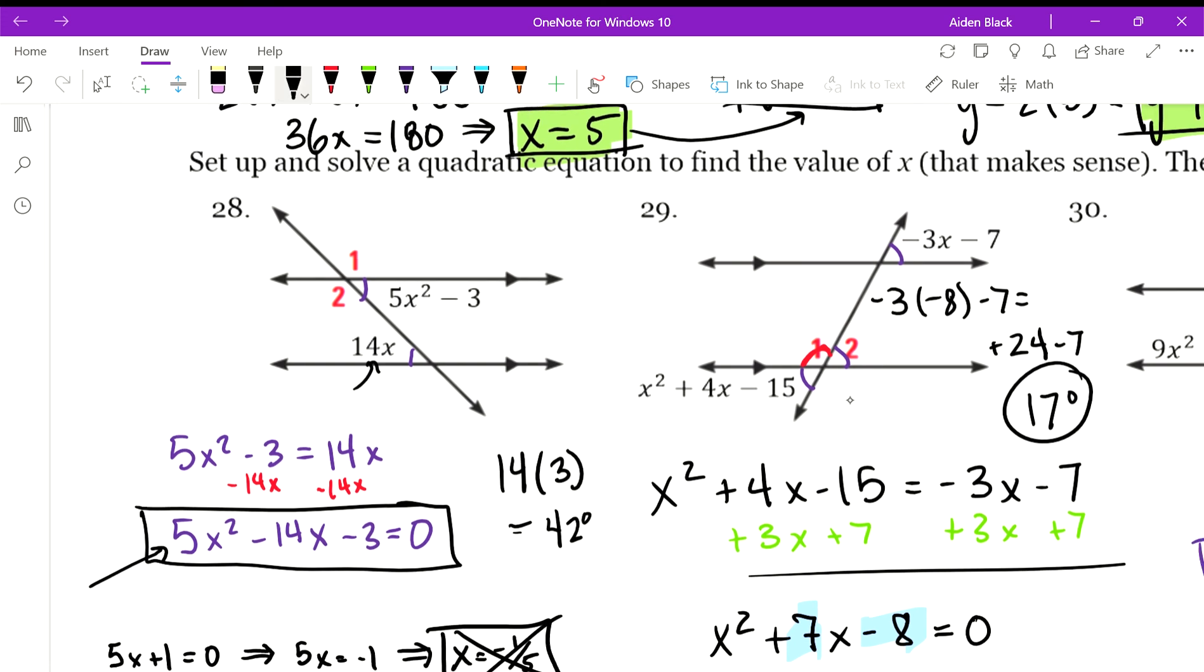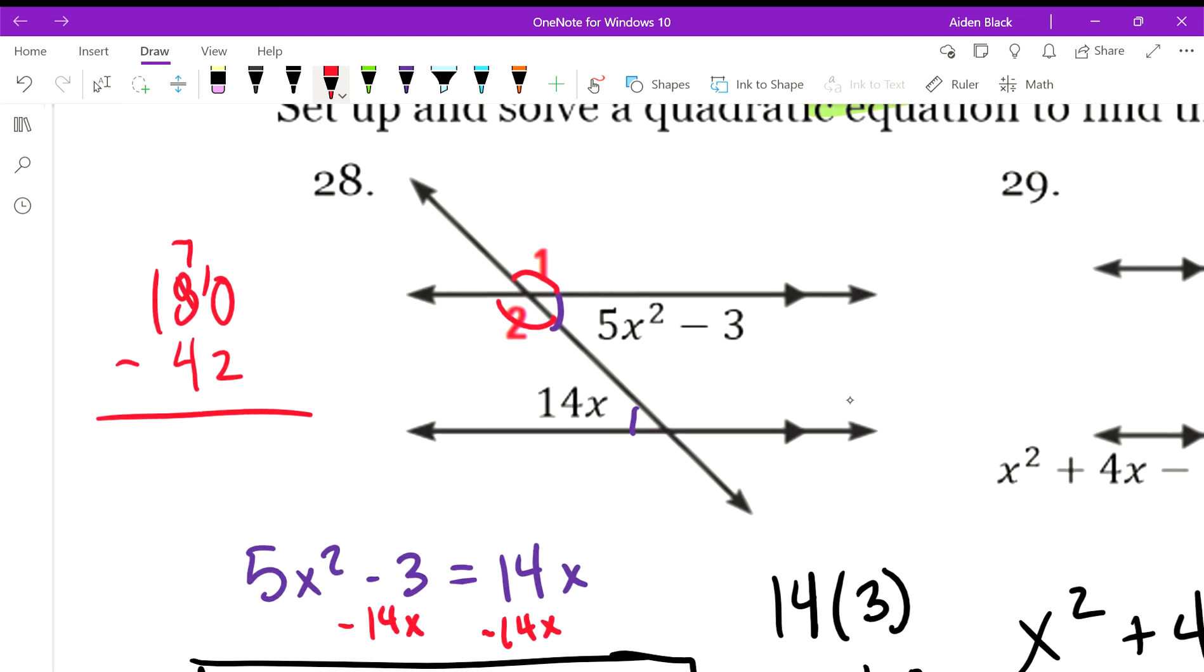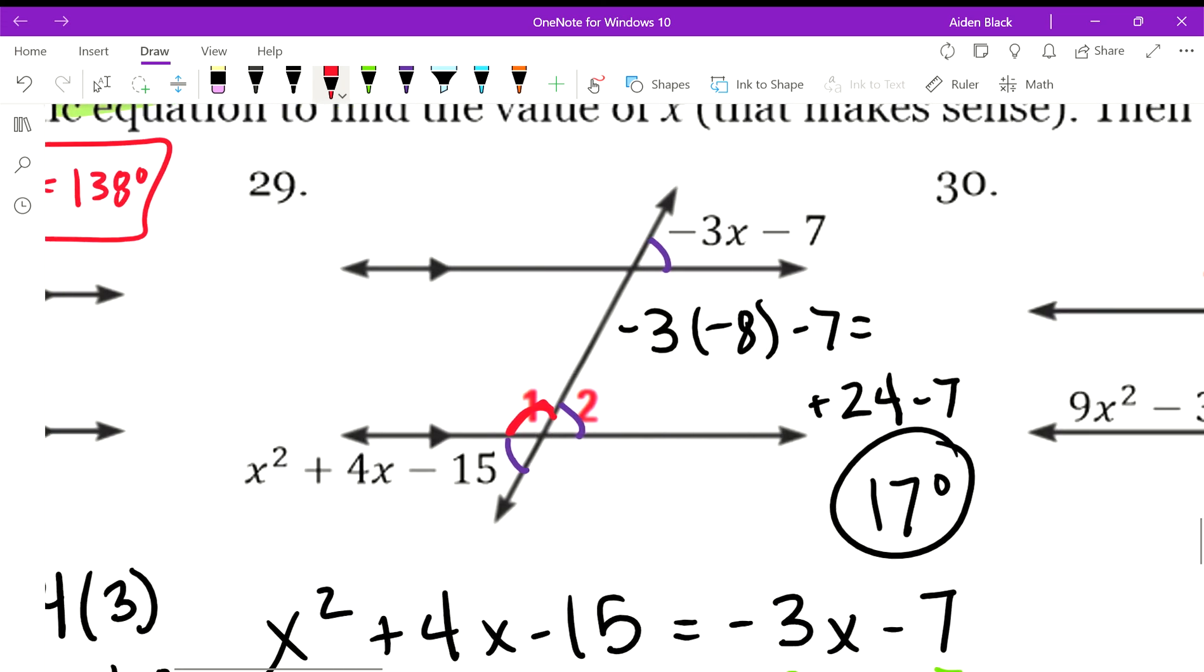42 degrees is this angle here and this angle here. So the measure of angle 1 and the measure of angle 2, those are congruent to each other and they're both supplementary to the angle we found, 42 degrees. So we'll just do 180 minus 42. We get 138. So the measure of angle 1 is equal to the measure of angle 2 is equal to 138. Try 30 on your own.